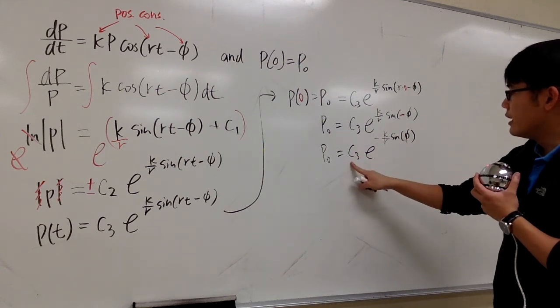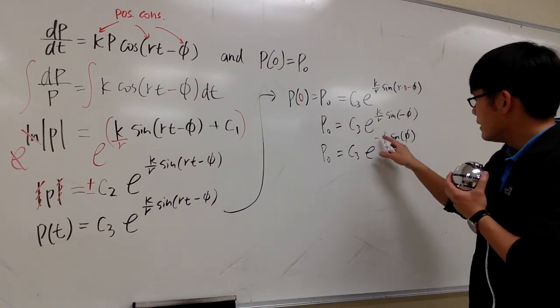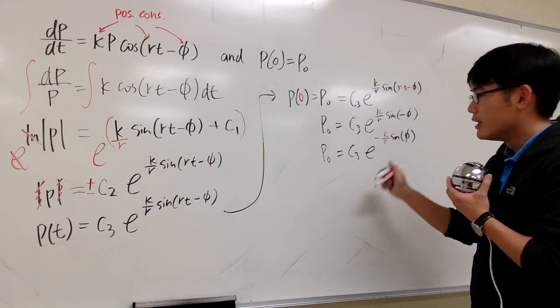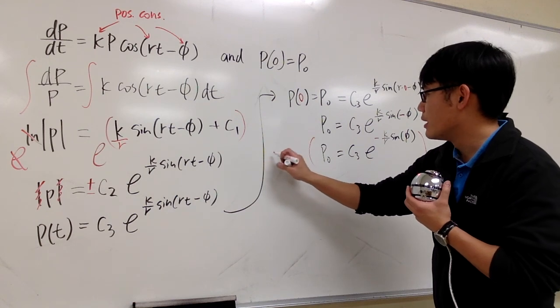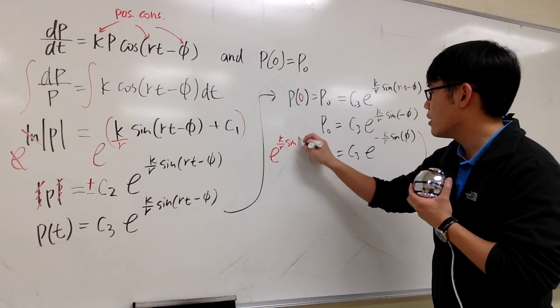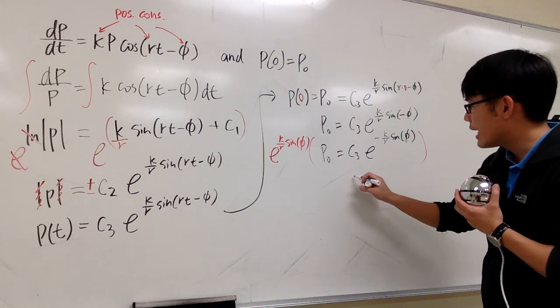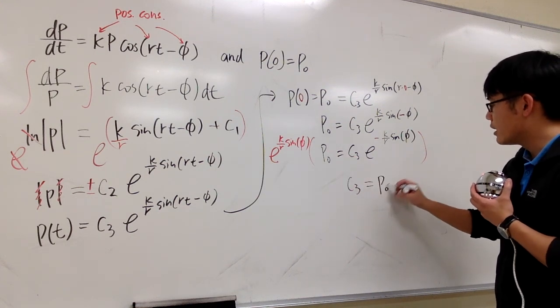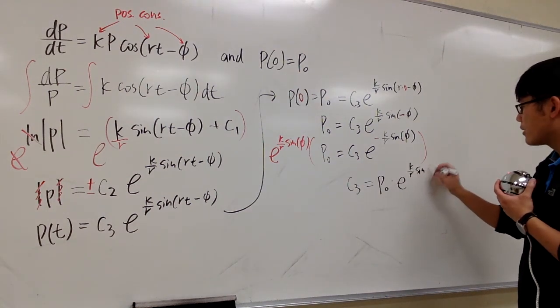And to solve for c3, I technically have to divide both sides by that, right? But then, this is technically in the denominator because we have a negative exponent. So technically, I will just multiply both sides by that, but with a positive power. e to the positive k over r, sine of v. This and that cancel each other out. And we conclude that c3 is equal to p0 times e to the k over r, sine of v.